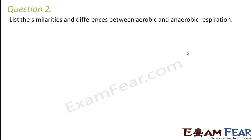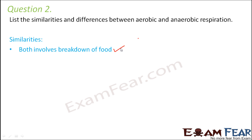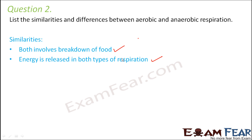Question number two: list the similarities and differences between aerobic and anaerobic respiration. For similarities — both are types of respiration where food is oxidized to release energy, so both involve breakdown of food. Energy is released in both types of respiration, whether it is aerobic respiration happening inside our body all the time, or anaerobic respiration happening in muscle cells during an emergency.